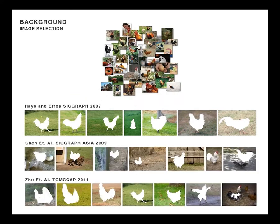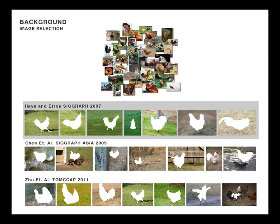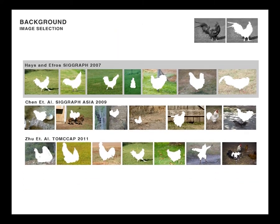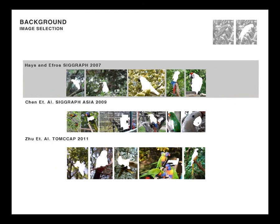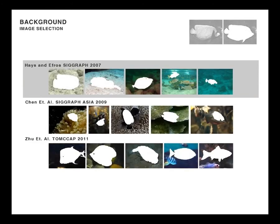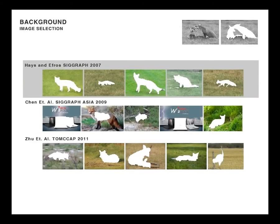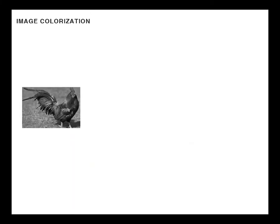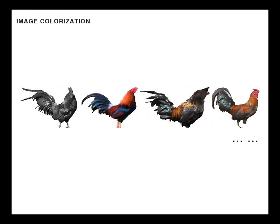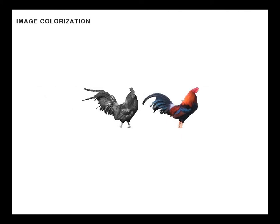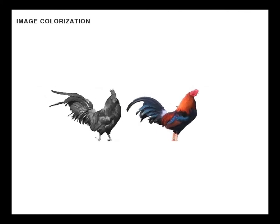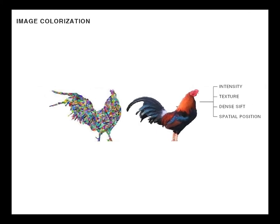Several comparisons to other methods are shown here. After finding the most suitable foreground regions in the downloaded images, we use each of them to colorize the grayscale foreground object. This is performed by transferring colors from the reference object to the target grayscale object at the resolution of superpixels.